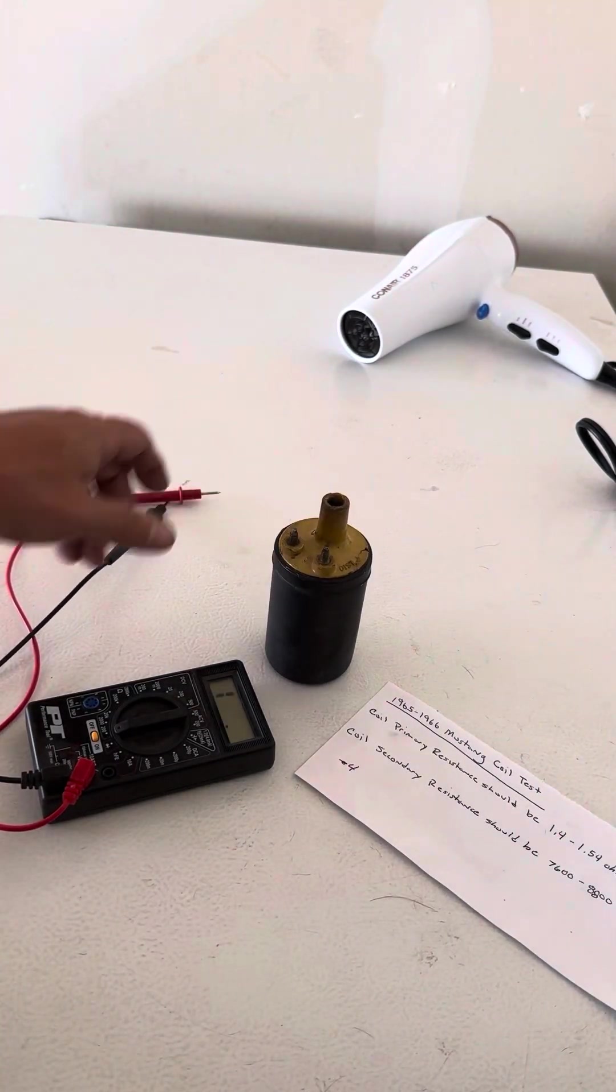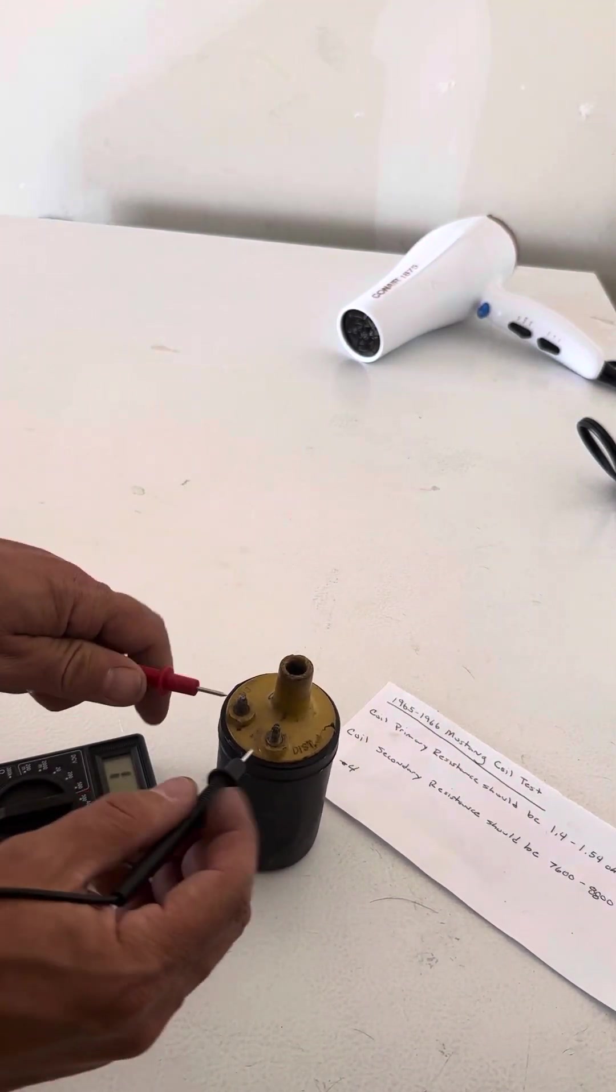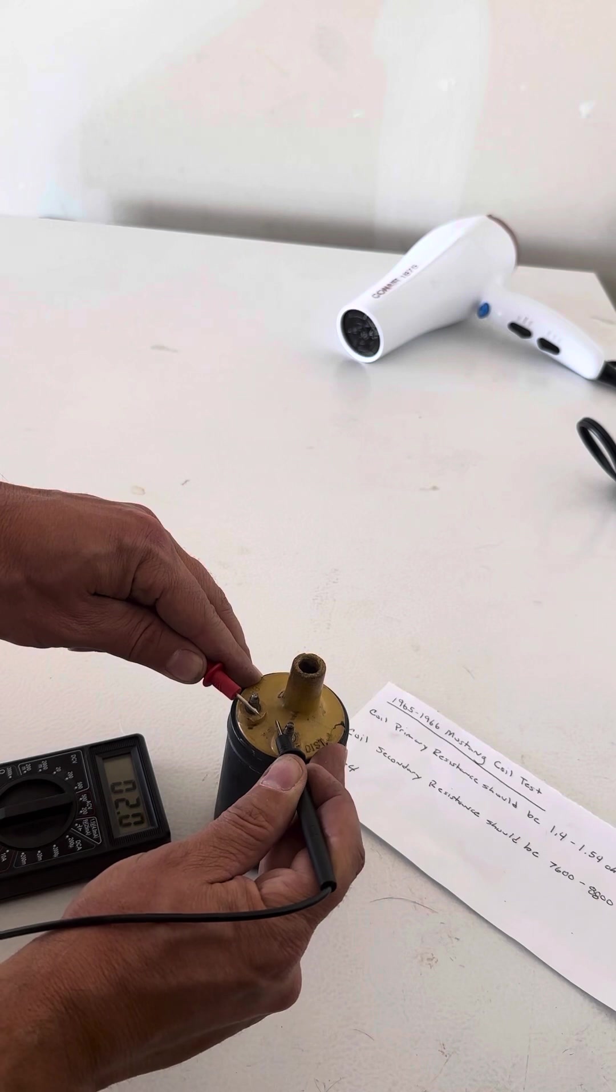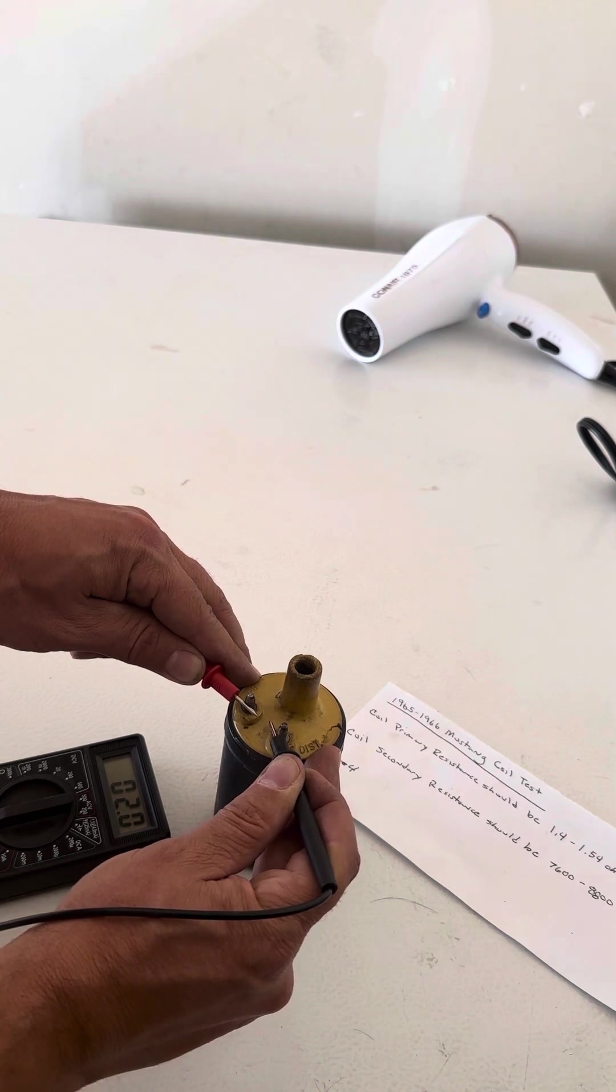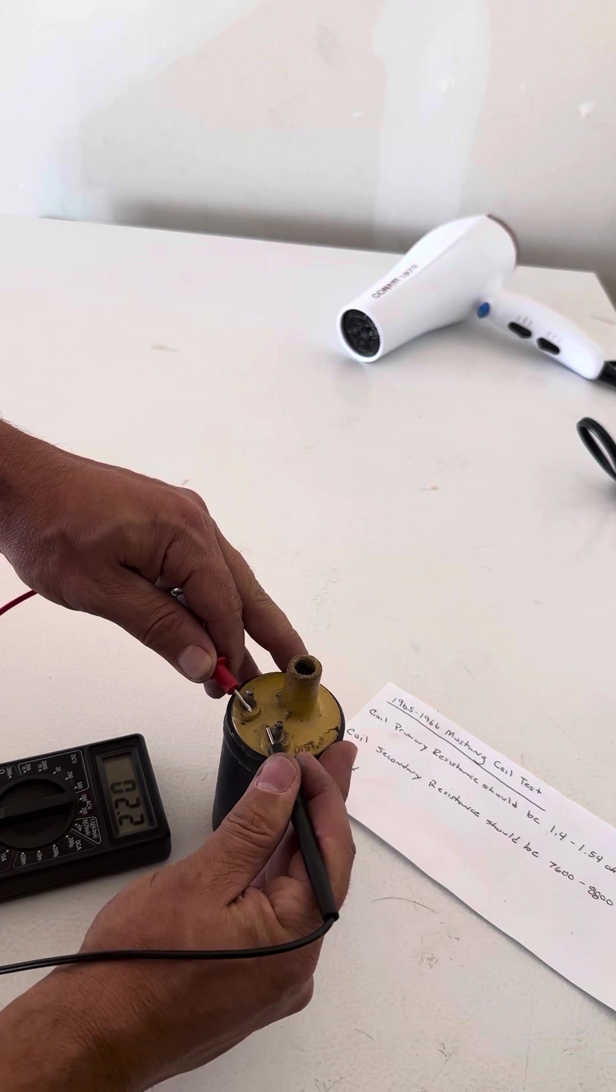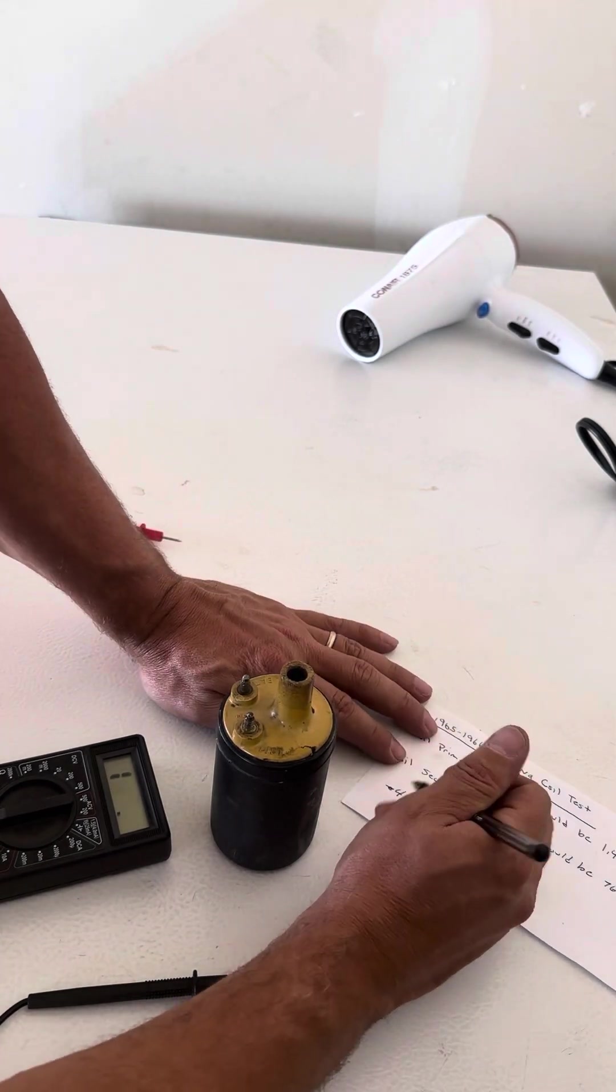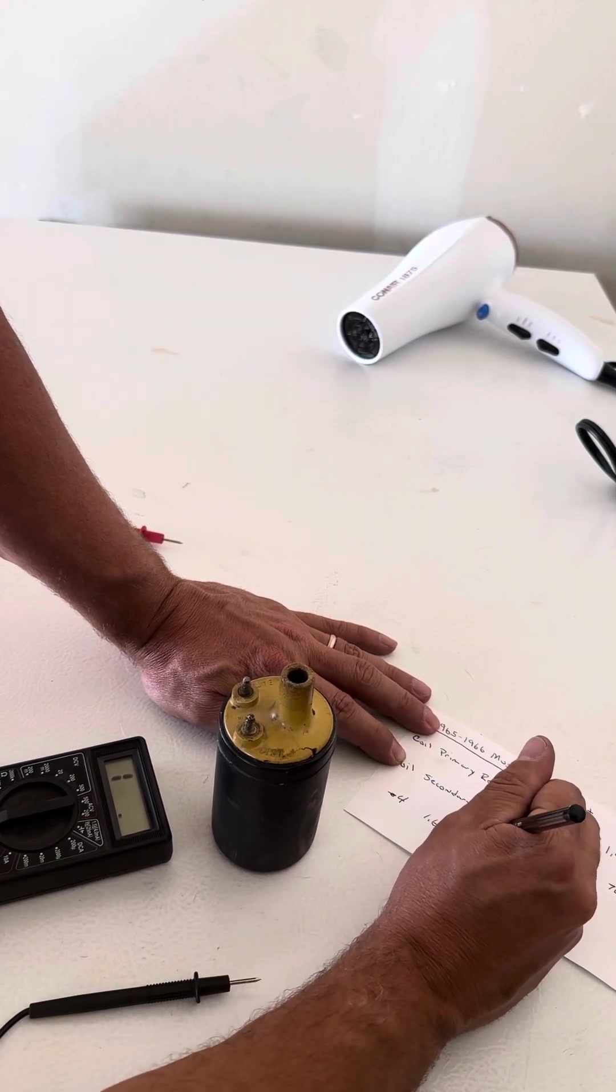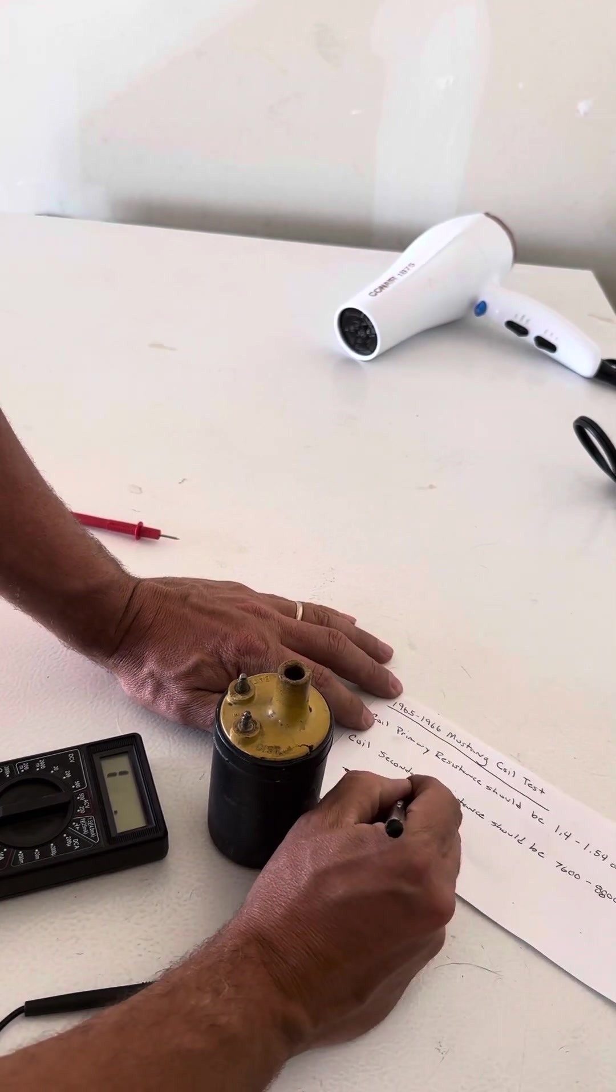So let's do that test right now. I'm getting 2.0, minus the 0.4, we're at 1.6 ohms for the primary resistance test.